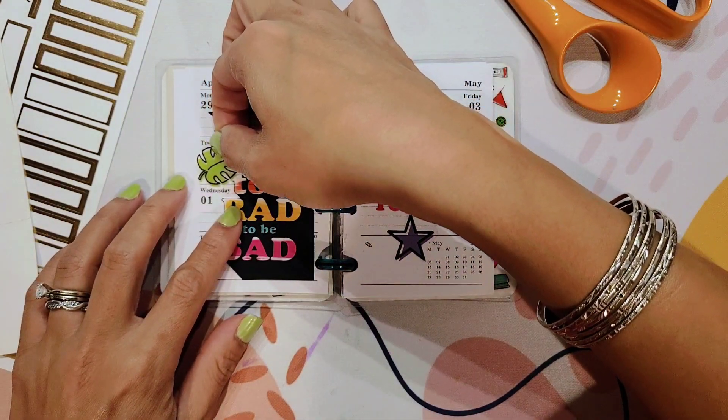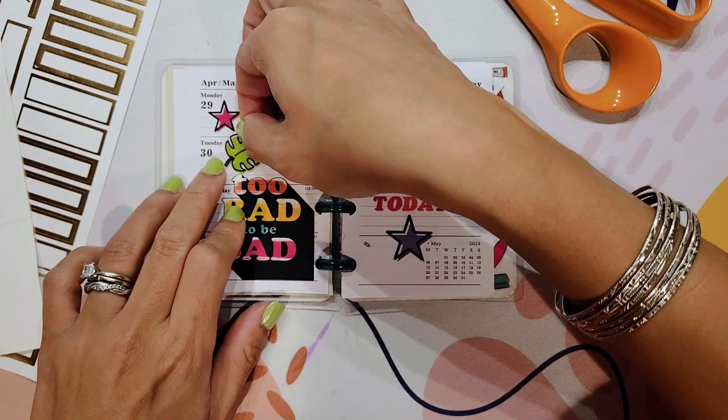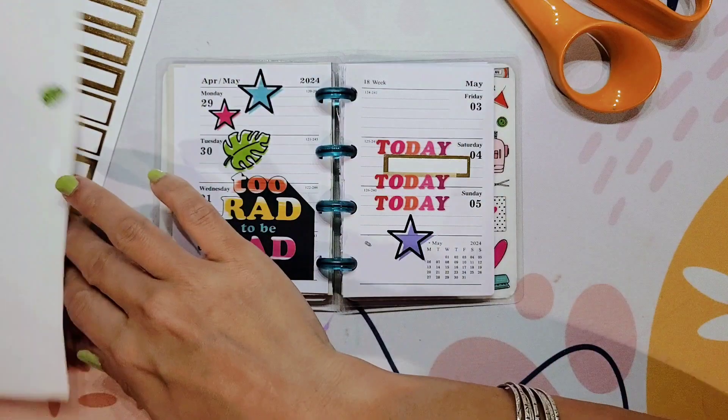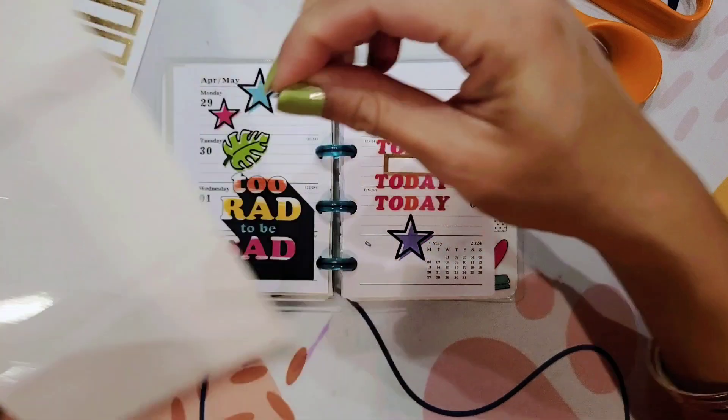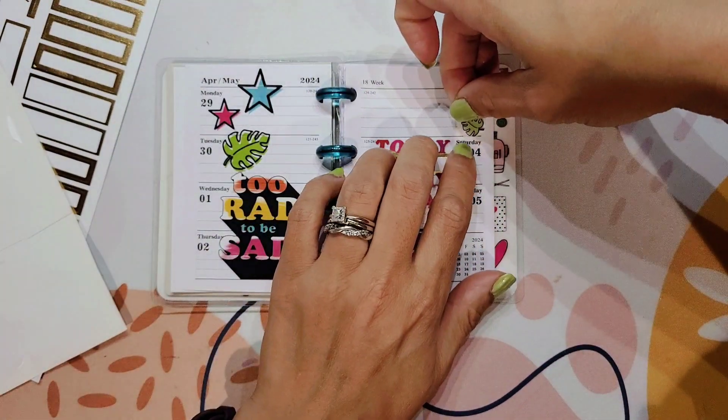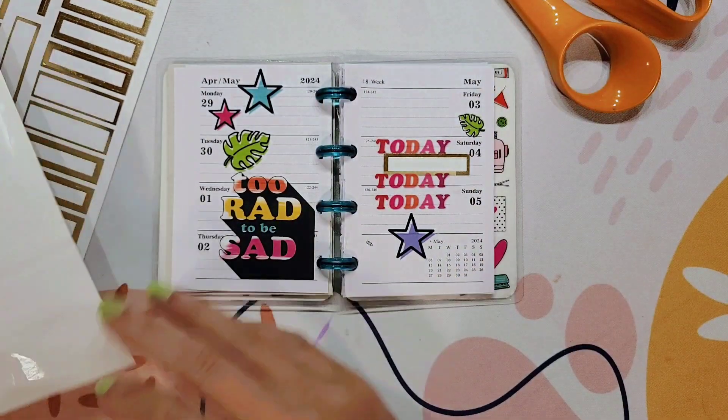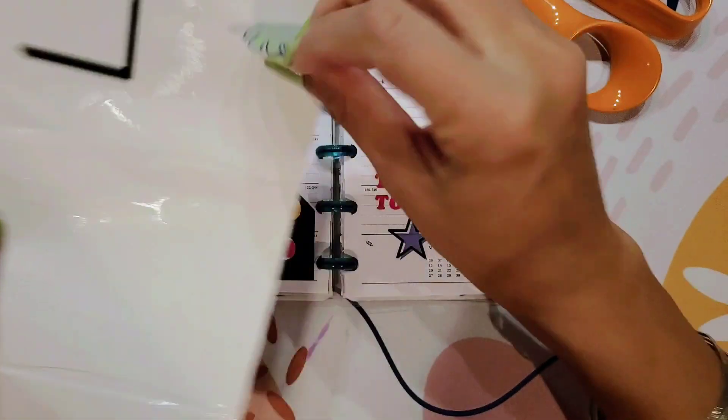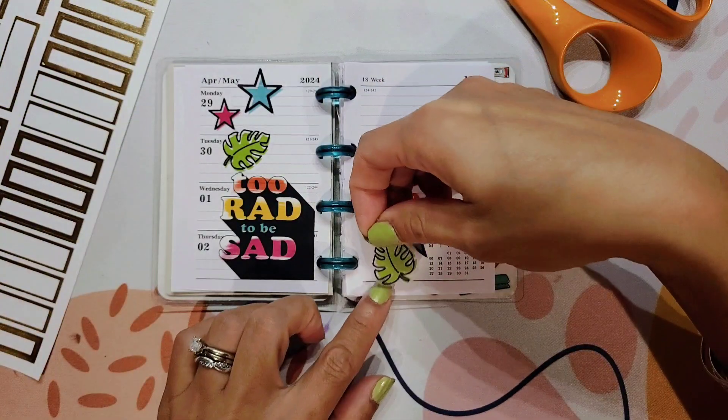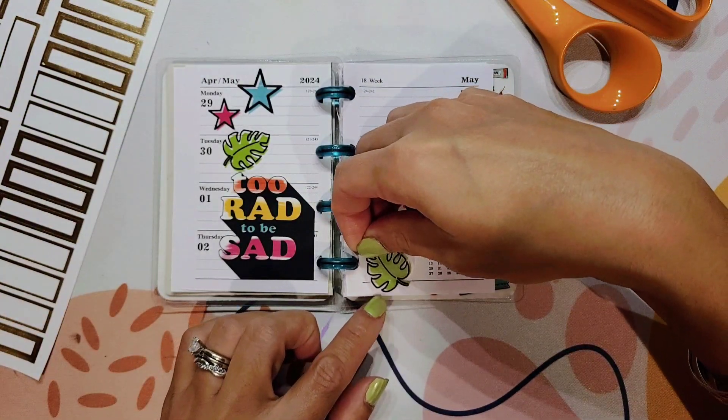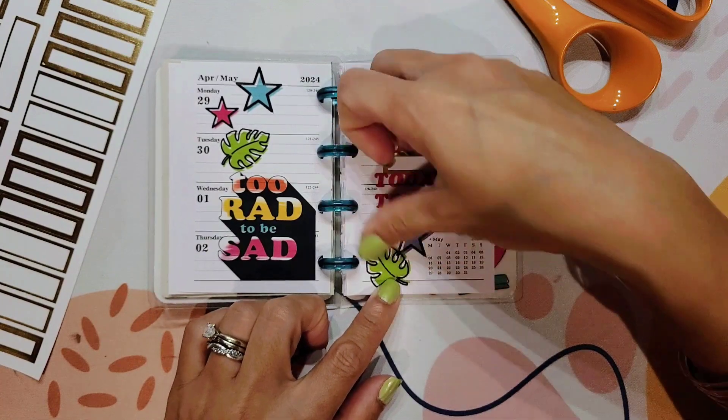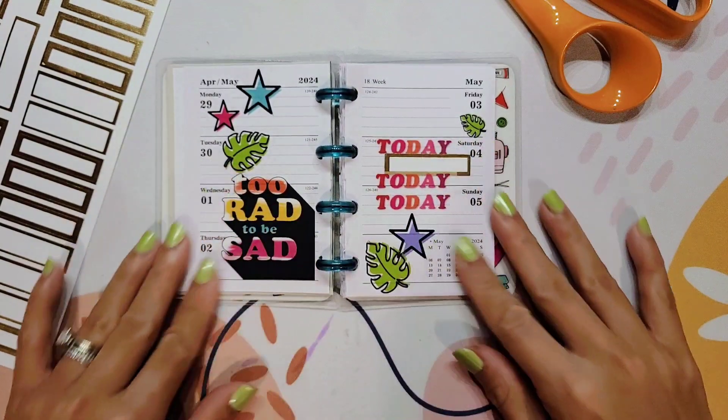Monstera leaves. Again, I don't feel like this entire sheet makes sense. Like it was just a bunch of loose stickers, but I'm just going to use the entire sticker sheet here. Let's stick this one right here. And then the last leaf, and this will finish out the sticker sheet. Again, it's kind of a random mix of everything. This was not a coordinated sticker sheet, but that's it.